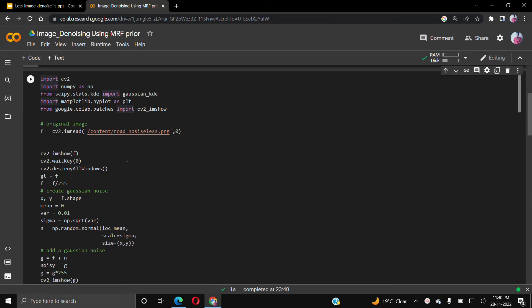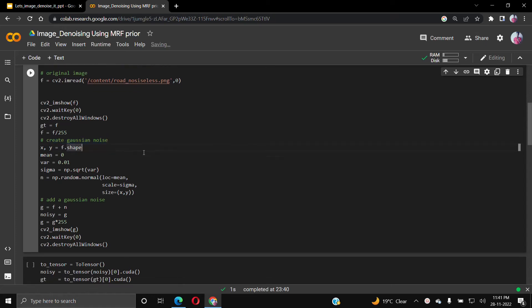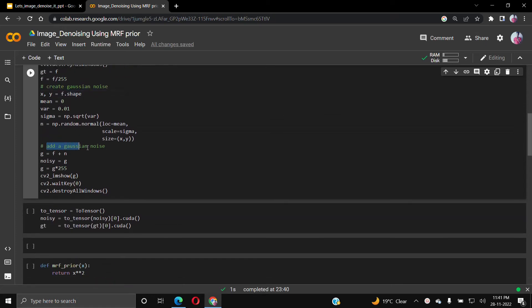We imported CV2, computer vision libraries, and we have an original image. We are adding some Gaussian noise to it and we get the noisy image—that is the original image plus some noise.